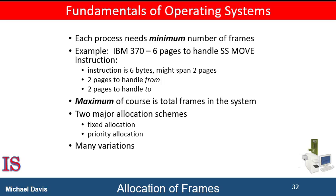Consider a simple case of a system with 200 frames. The operating system may take 50, leaving 150 frames for the user processes. Under Pure Demand Paging, all 150 frames would initially be put on the free frame list. When a user process starts executing, it will generate a sequence of page faults. The first 150 page faults would all get free frames from the free frame list. When the free frame list is exhausted, a page replacement algorithm could be used to select one of the 150 pages to be replaced with the 151st, and so on. When the process terminates, the frames it was using would be once again placed on the free frame list.